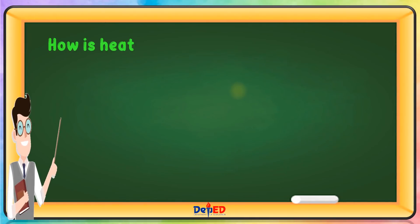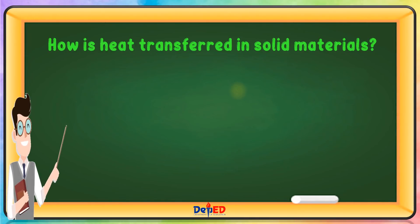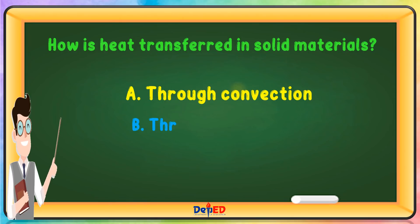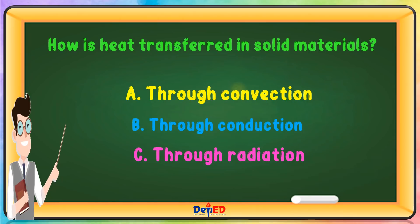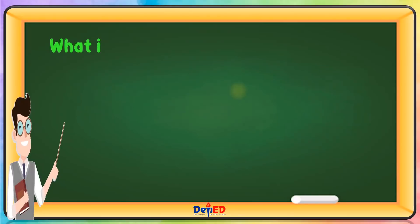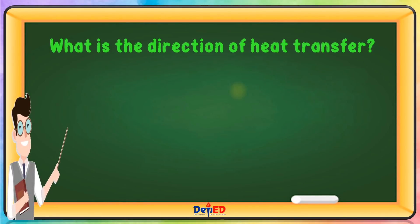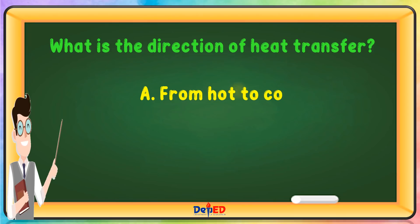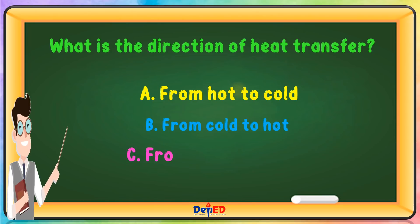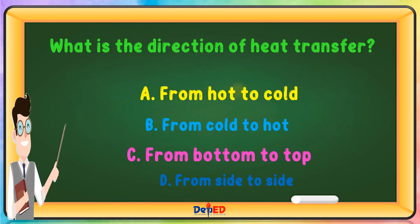Question 4: How is heat transferred in solid materials? A. Through convection, B. Through conduction, C. Through radiation, or D. Through vacuum. The correct answer is B. Question 5: What is the direction of heat transfer? A. From hot to cold, B. From cold to hot, C. From bottom to top, or D. From side to side. The correct answer is A.